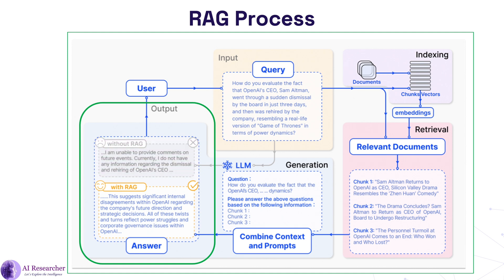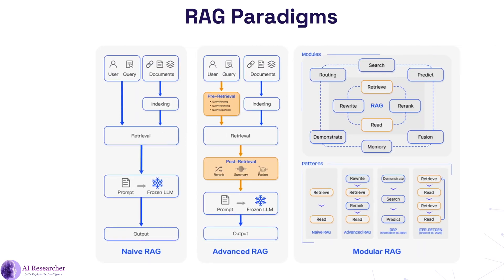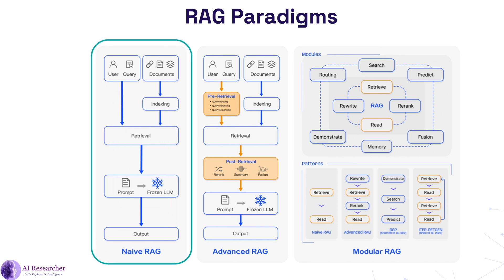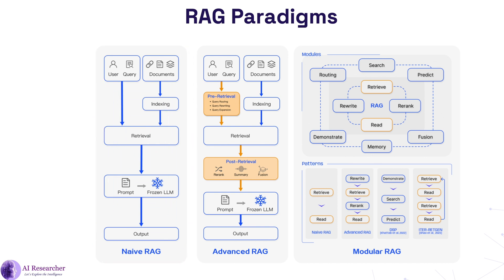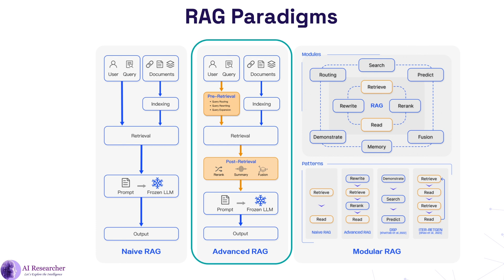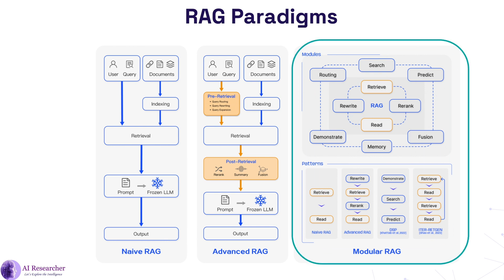Next are the different RAG architectures. Naive RAG contains the elements I explained: indexing, document retrieval, prompt generation, and then the frozen LLM that produces the output. Next is Advanced RAG, which introduces more complexity to improve response quality. It includes pre-retrieval components and post-retrieval components. Then there is Modular RAG, which has a more flexible system where modules can be dynamically configured, with modules like search, predict, and memory, and patterns such as demonstrate, search, and predict.